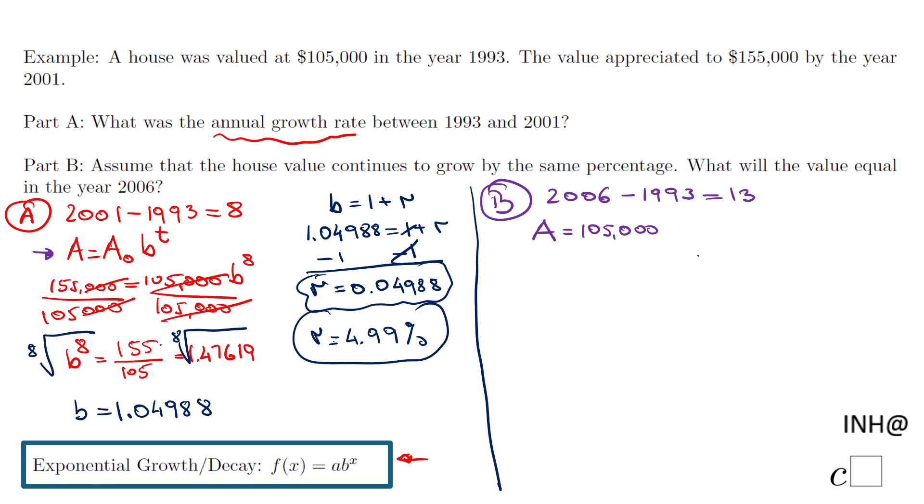Times b—remember we found b before, so if you still have it in the calculator, that's great. I have 1.04988, just the first five digits, raised to the power of 13.